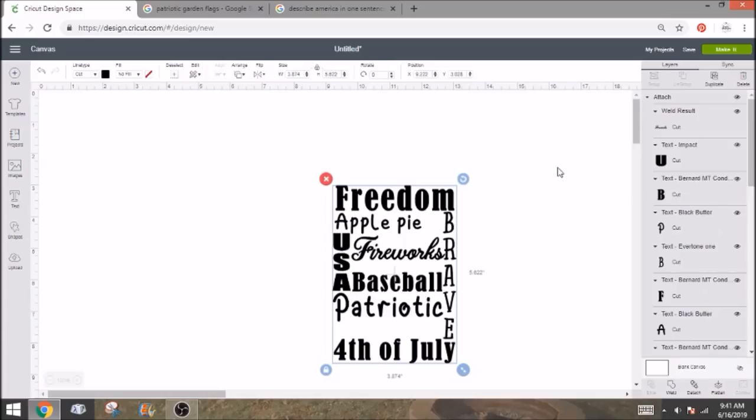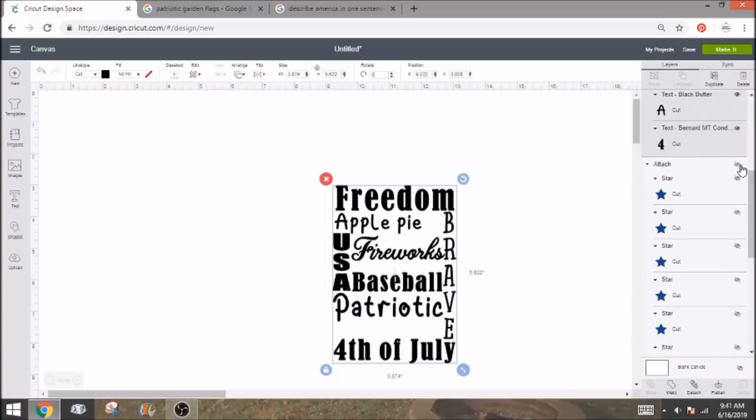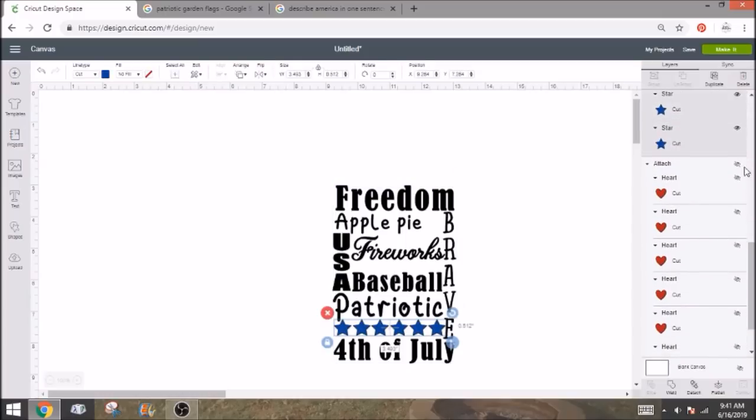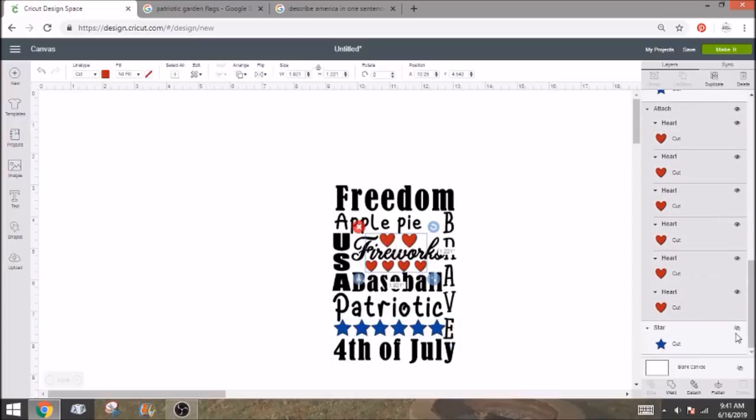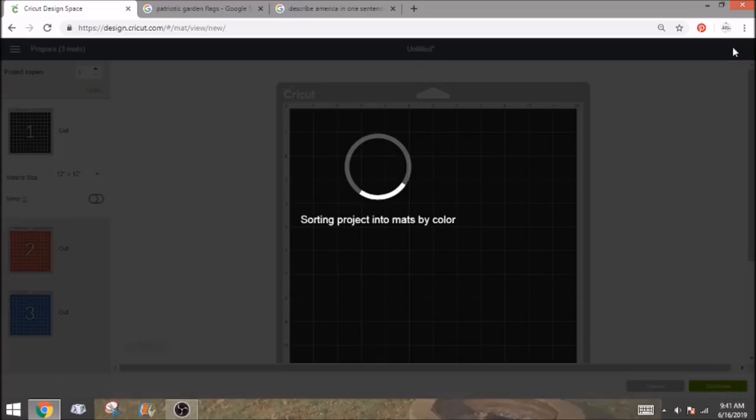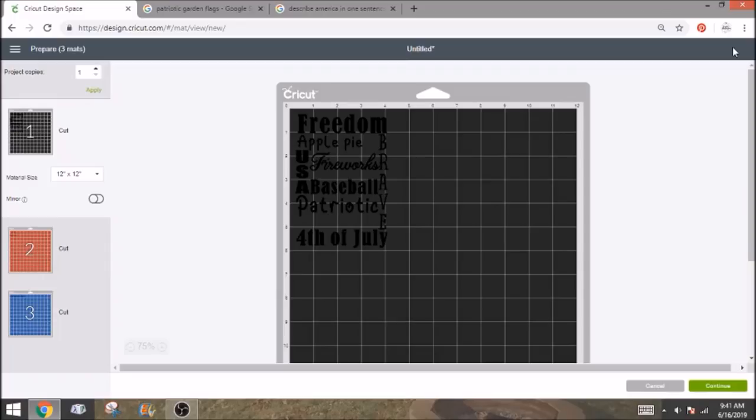Next thing we'll do is click over here and we're going to find select all. You're going to select all and you are going to attach. What that does is it just makes sure that nothing moves on your screen so that when you go to cut this, it's going to cut in this exact design and save it just like how you have it laid out. Before you go to click make it though, you want to make sure that you bring back all of your colored pieces so that you can just cut everything without any worries. Go ahead and click make it and we'll show you guys what it's going to look like once it's on our screen.